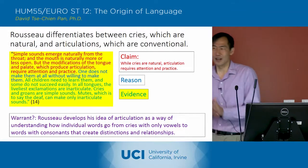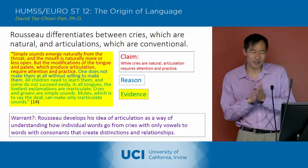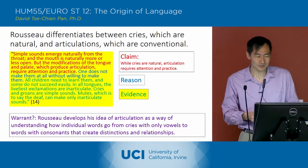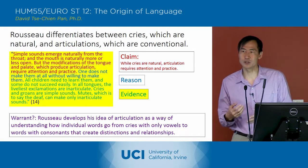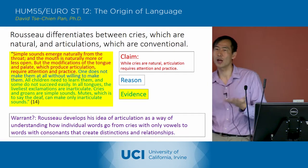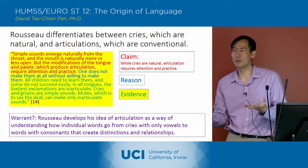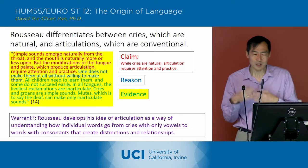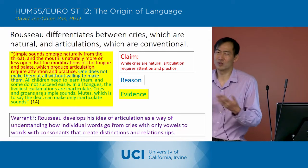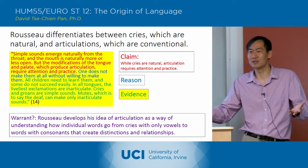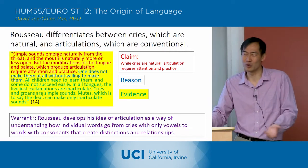So next, what I want to talk about is chapter four, which discusses the difference between cries and articulations. He says that cries of passion are natural, and articulations are conventional. When he says articulation, you can imagine an animal has these cries — like the howl of a wolf or the bark of a dog.